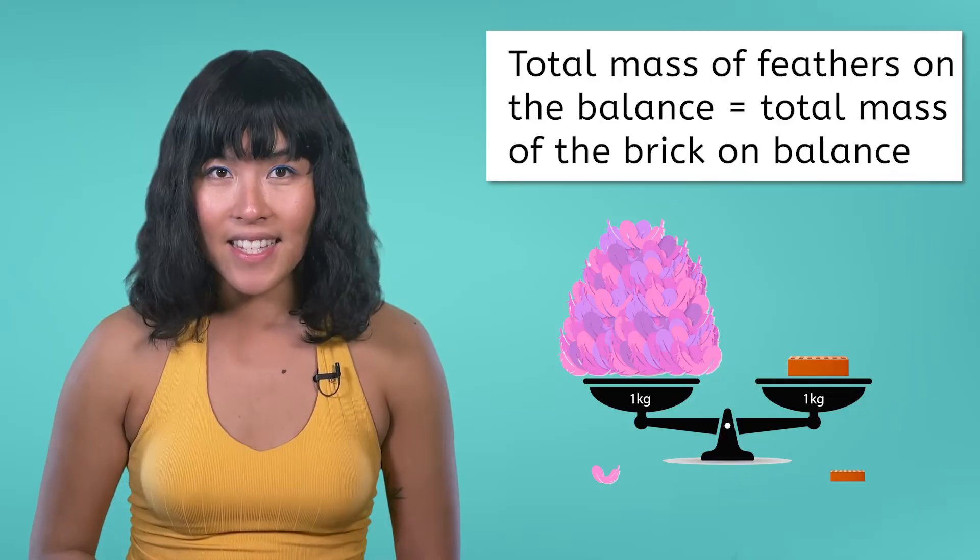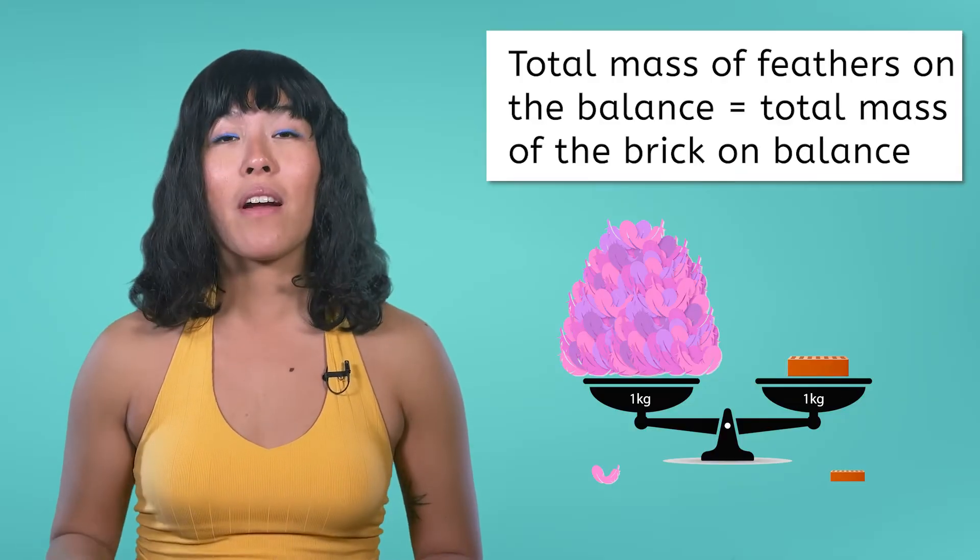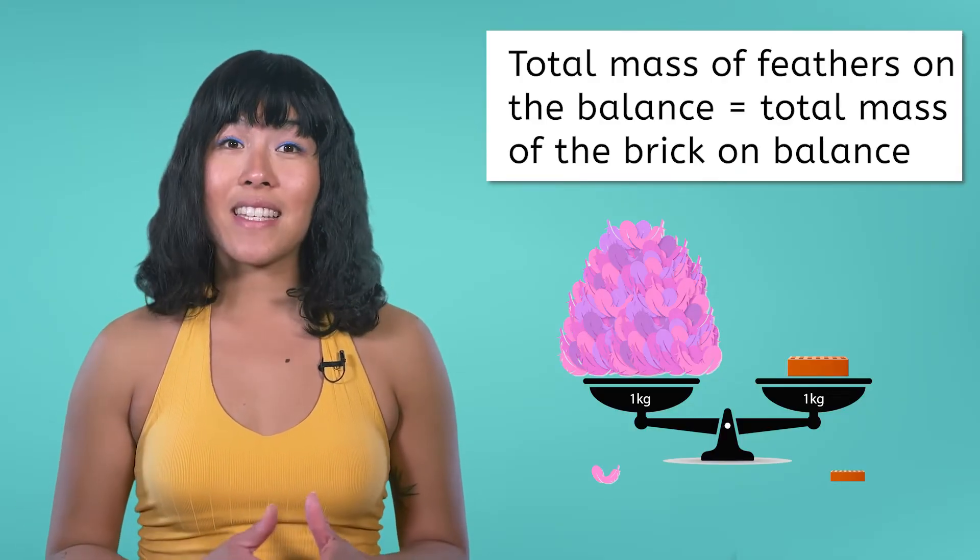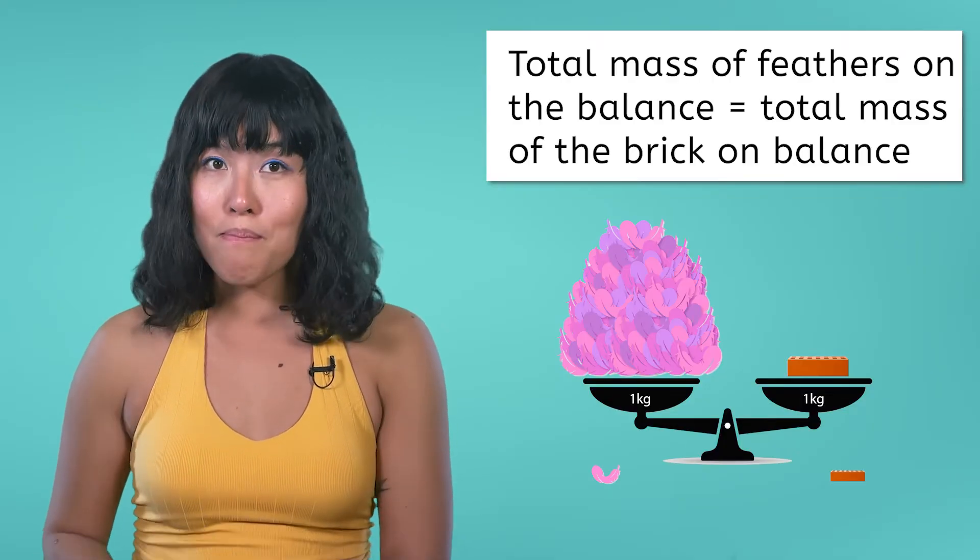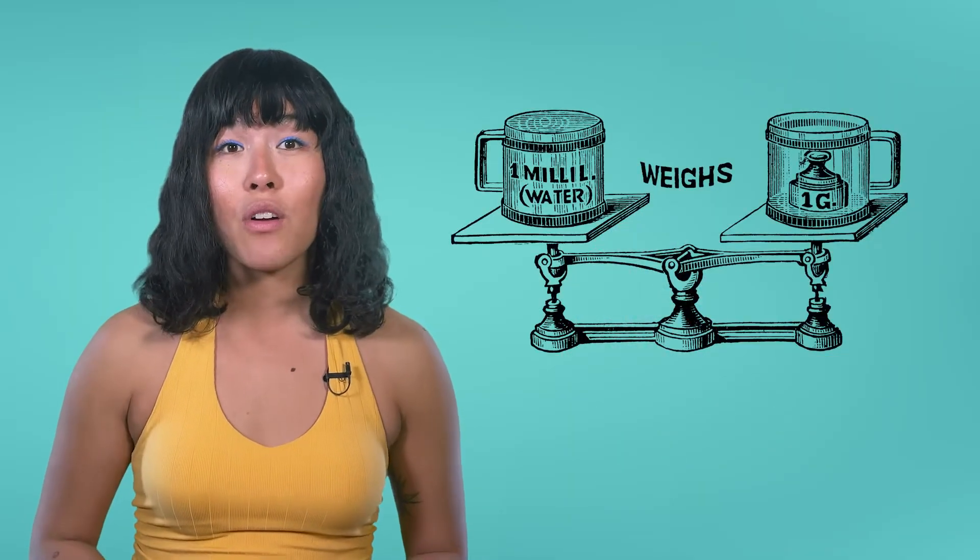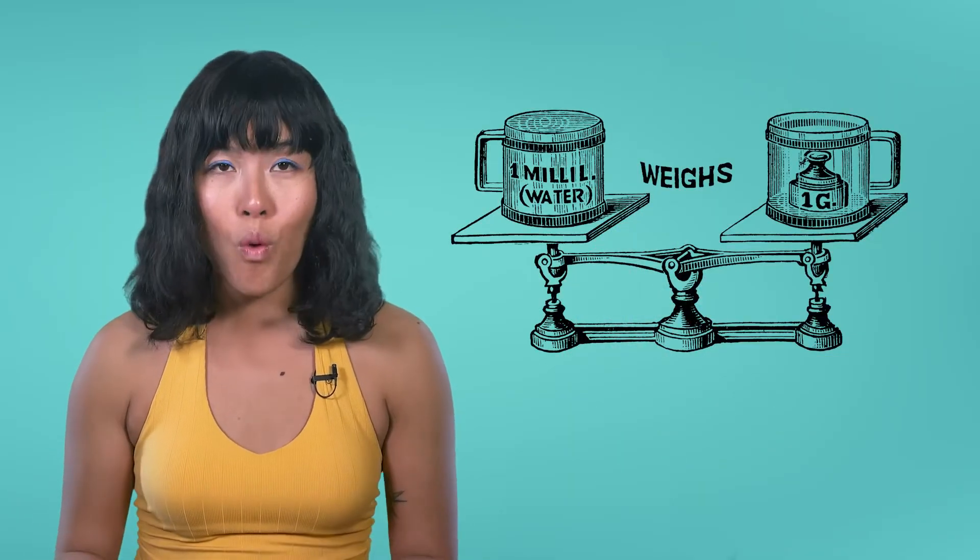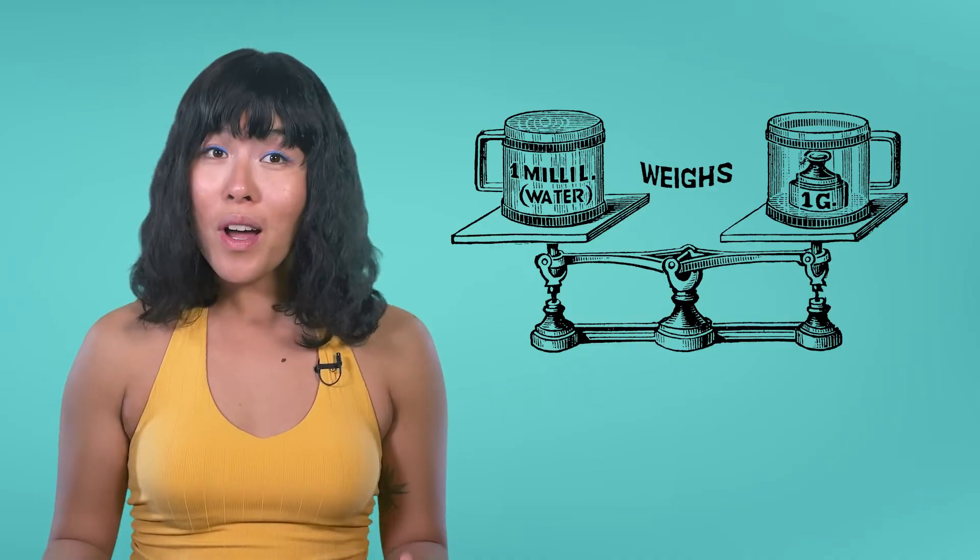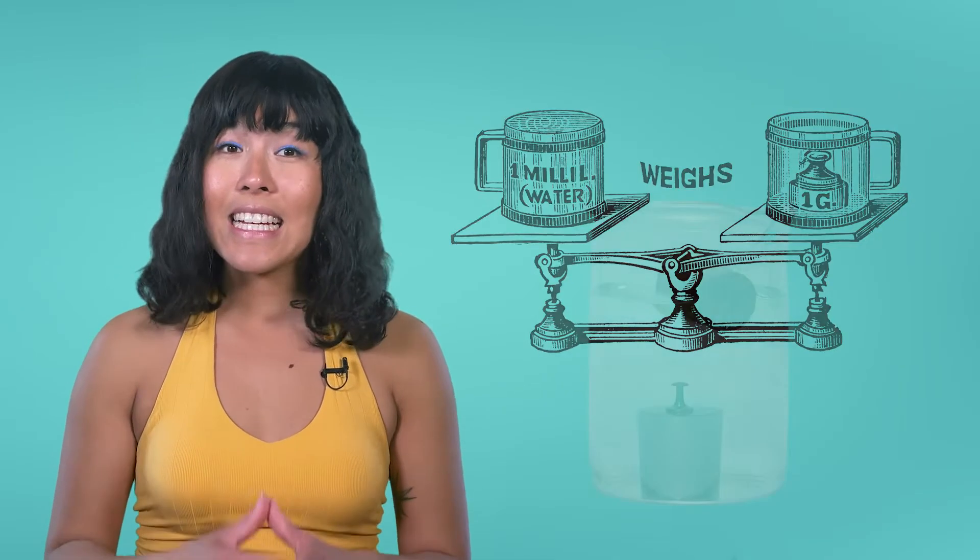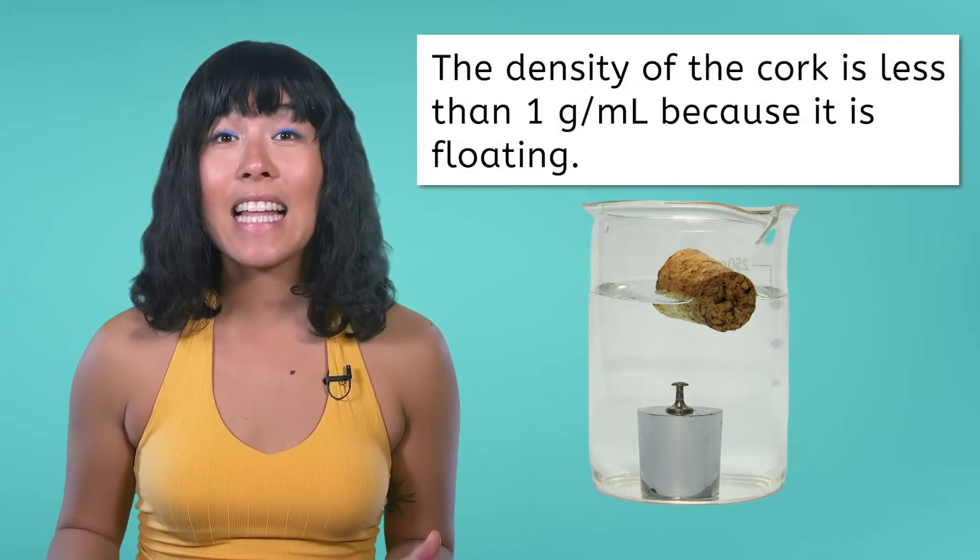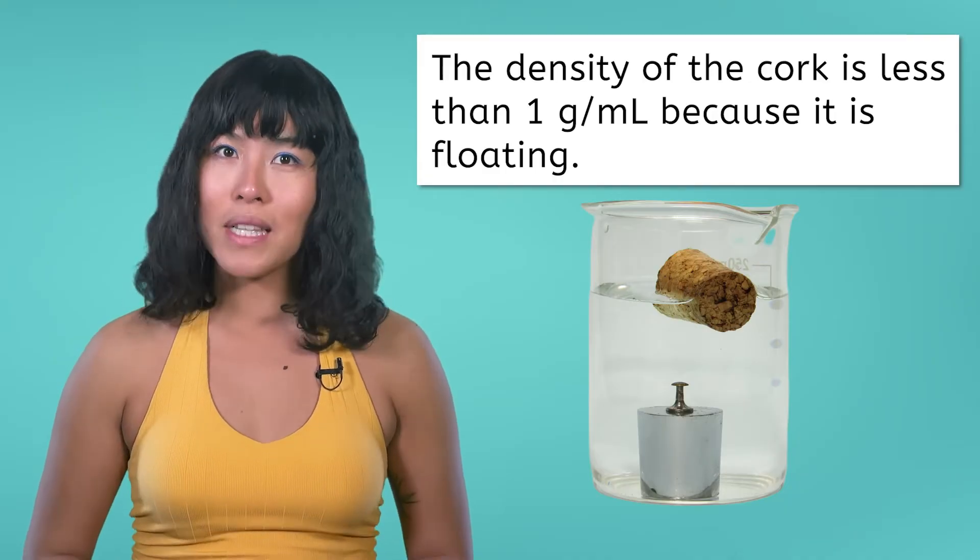When discussing density, it is common to compare an object's density to the density of water. The density of water is equal to one gram per milliliter. This means that one milliliter of water has a mass of one gram. If you want to compare the density of an object to the density of water, you simply place it in a container of water to see if it sinks or floats. If an object floats, like the piece of cork in this image, it has a density less than water, or less than one gram per milliliter.